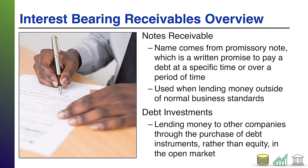Notes receivable, on the other hand, are a written payment agreement — the name comes from the word promissory note. It's basically a written promise to pay a certain amount of debt in a certain period of time. With notes, in these written contracts, you're typically not getting to pay that money over time for free — there's usually interest involved. If you're the lender, you receive that interest; if you're the borrower, you pay it.